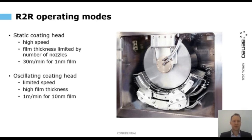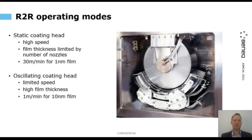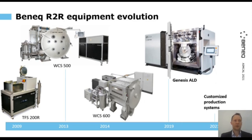In our standard system, with the oscillating mode running at one meter per minute, we can make a 10 nanometer film thickness — that's kind of the rule of thumb. Whereas with the static coating head, the film thickness doesn't really depend on the line speed, and the highest speeds we have demonstrated are around 30 meters per minute. We have been working on roll-to-roll ALD for more than 10 years already. We started with the small system, and back in 2009 we made a prototype machine, the TFS-200R.